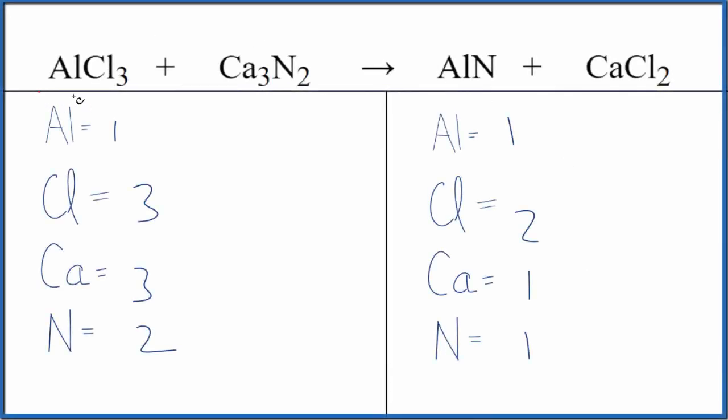Let's balance the equation AlCl3 plus Ca3N2, aluminum chloride and calcium nitride. We'll also look at the type of reaction and the states.